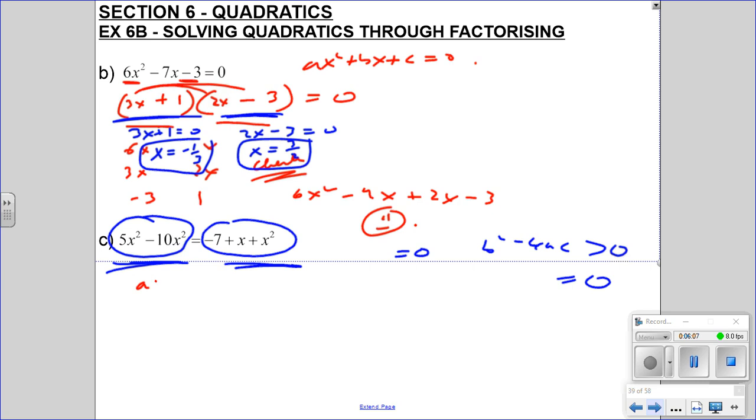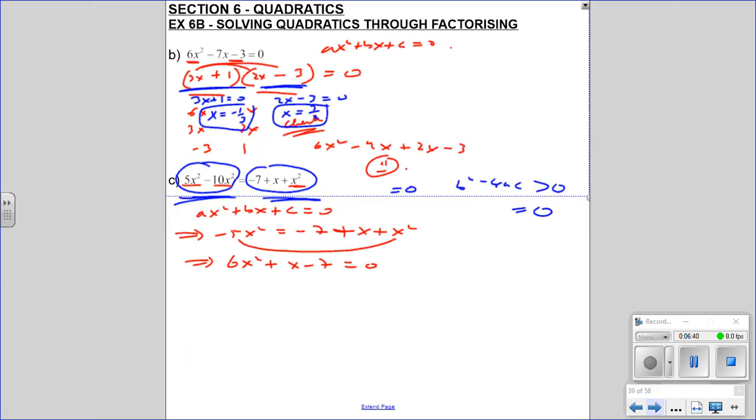First we need to get this in the form ax squared plus bx plus c equals 0. We can't do anything until we've done that. 5x squared take 10x squared - we know it's minus 5x squared, and we've also got this x squared over here. I don't really like minuses in front of x squared, so I'm going to plus 5x squared onto that side. So we get 6x squared plus x minus 7 equals 0.